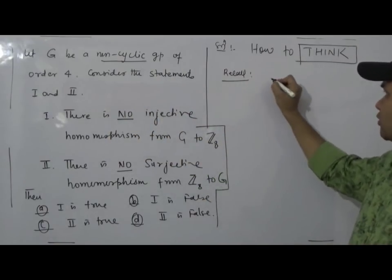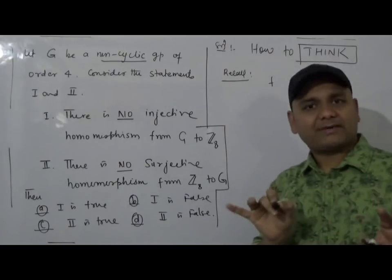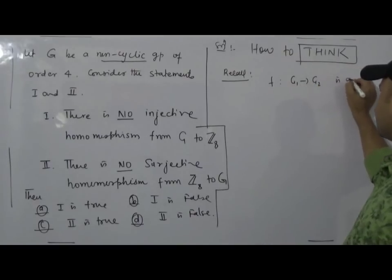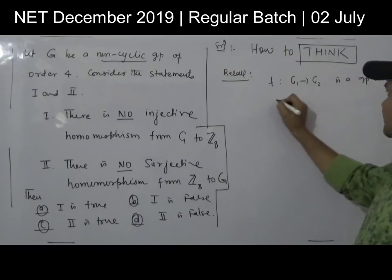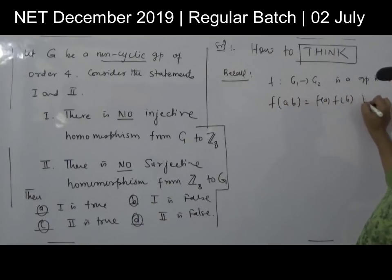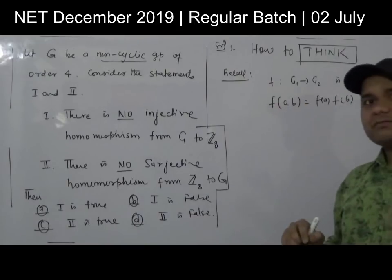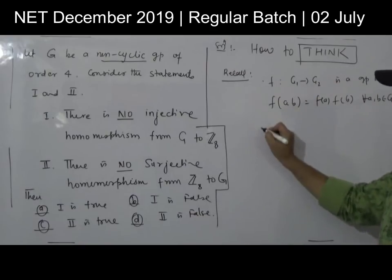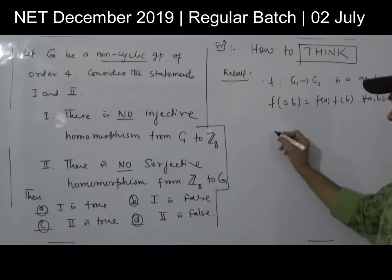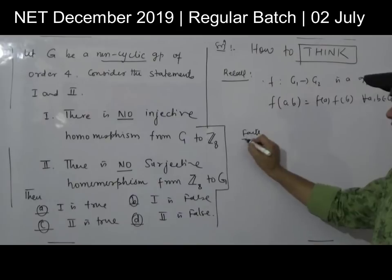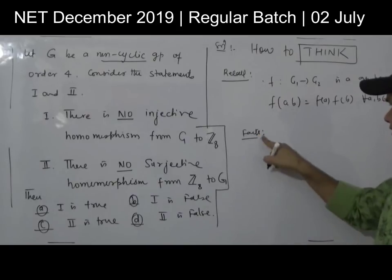Since we are talking about homomorphism, first we know what we mean by homomorphism. A mapping from a group G1 to G2 is a group homomorphism if it preserves operations — if any function from G1 to G2 preserves the operations. Now, second, these are certain key facts and results.